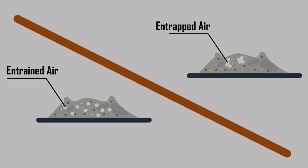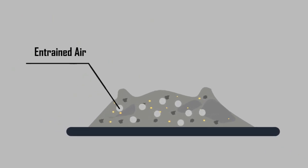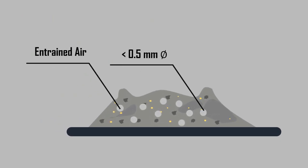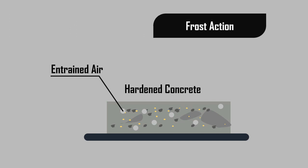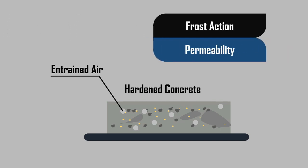The entrained air is different from entrapped air, which is formed due to insufficient compaction. The entrained air is formed discontinuously with less than 0.5 mm in diameter. The entrained air also modifies the properties of hardened concrete, such as resistance to frost action and permeability.